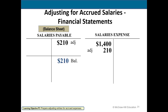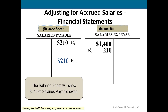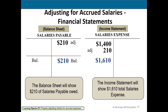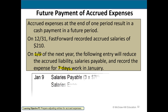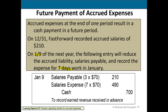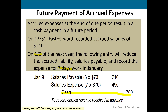Salaries payable is a liability on the balance sheet; salaries expense is an income statement item. In the next period, on January 9th, we pay two weeks of salaries — 10 days total, $700 credited to cash. The expense for January is seven days, and we reduce the liability recorded for the prior three days. The debits are split: one to reduce the prior liability and one to increase the current period expense.